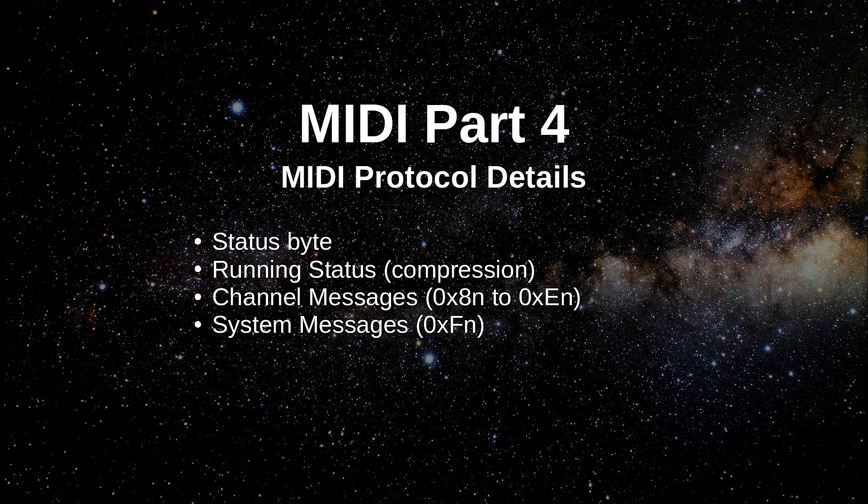This is part four. Basically we're going to talk about the status byte and how that works. We're going to talk about running status and what that is - it's basically a form of compression but it works in an interesting way. And then we're going to talk about the difference between channel messages and system messages. So let's go over to the bench as usual and we'll have a look at some information.